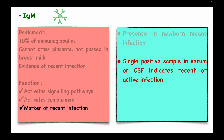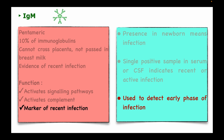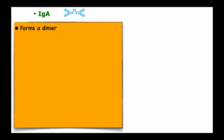A single positive sample in the serum or cerebrospinal fluid may indicate a recent, active infection. For example, if a patient has hepatitis B infection and immunoglobulin M to hepatitis B virus is detected, it indicates a recent and active infection. However, the presence of immunoglobulin G in the same patient may indicate a chronic infection or recovery from the infection.